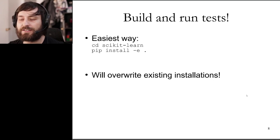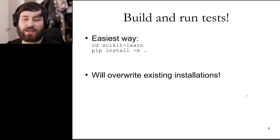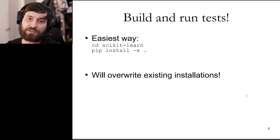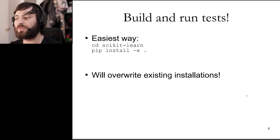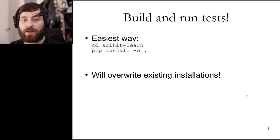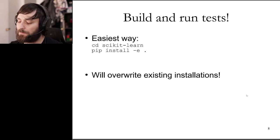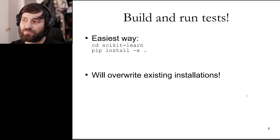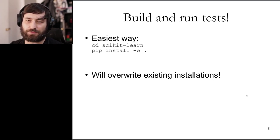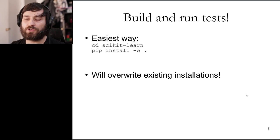An editable installation means that if you change files in this folder, it will be automatically reflected in your installation. This will override existing installations, so make sure you don't have scikit-learn already installed — run conda uninstall scikit-learn in this environment if you accidentally installed it earlier. If you're on Windows, you'll need a C++ compiler, specifically the Visual Studio toolkit. If you try pip install -e . and get an error, the message will tell you exactly what to download.